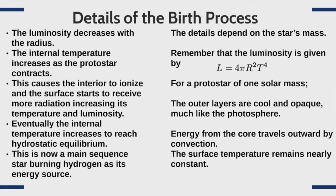Some details of the birth process: as a star shrinks, its luminosity decreases because the smaller radius means less surface area to emit light. As the protostar contracts, its internal temperature increases, causing the interior to ionize and the surface to receive more radiation, which increases its temperature and luminosity. Eventually the internal temperature increases to reach hydrostatic equilibrium — a balance between outward radiation and thermal pressures and the crush of gravity — and that's when the star becomes a main sequence star. Luminosity is related to the fourth power of temperature and the square of the radius.